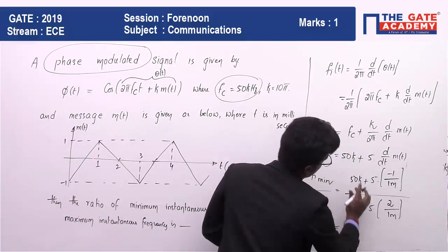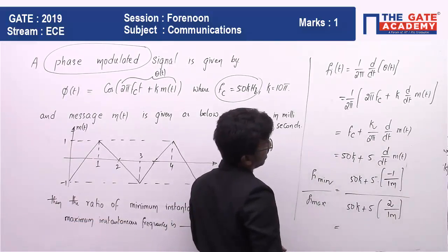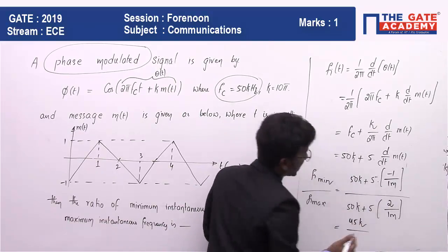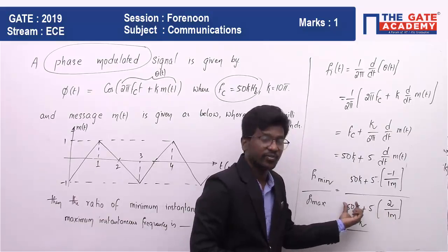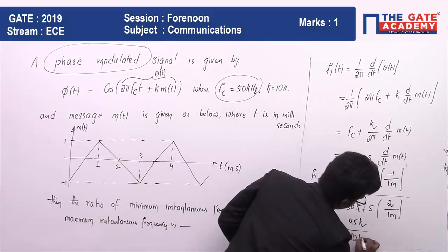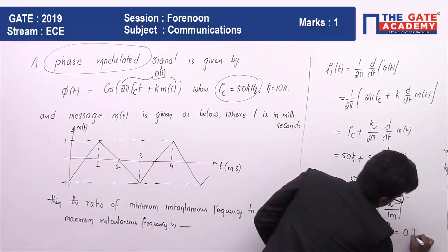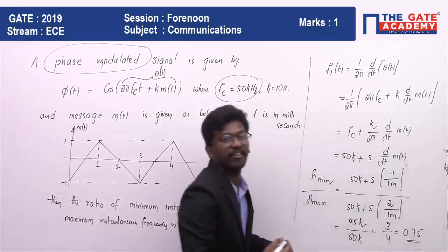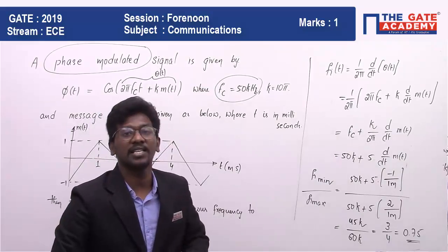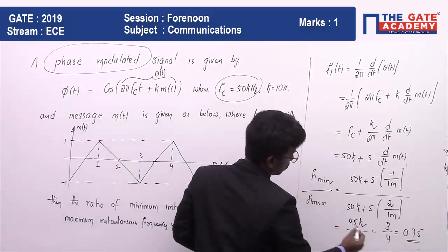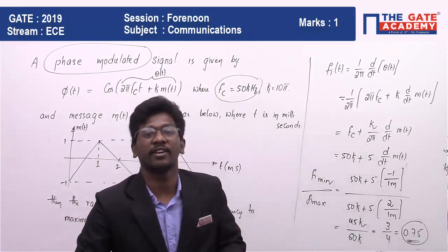If you calculate this, you will be getting 50k - 5k, that is 45k divided by this, you will be getting 50k + 10k, that is 60k. That is 45/60. So 0.75 is the correct answer. So that is nothing but the ratio of these two. The answer is 0.75.